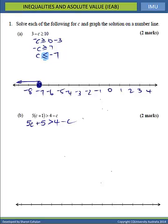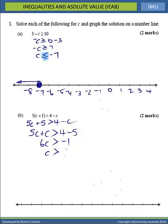We now need to put all our C terms on one side of the inequality and the non-C terms on the other. So we will have 5C, and the minus C will come across as plus C, giving us 6C greater than 4. The plus 5 goes across as minus 5, so 6C is greater than negative 1, and C is greater than negative 1 sixth.